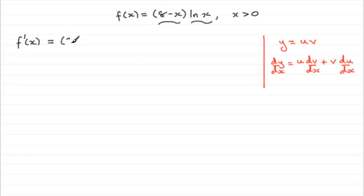So what we're going to do is just say, well it's the first part, that's 8 minus x multiplied by the differential of the second part. So differential of natural log of x is 1 over x. And then we add the second part, natural log of x.